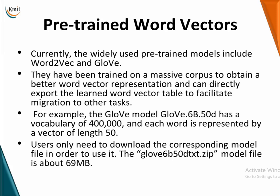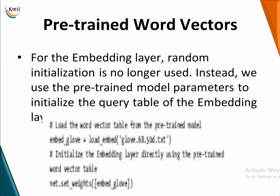For example, the GloVe model has a vocabulary of 400,000 words and each word is represented by a vector of length 50. It is already pre-trained with the best vector representation and you can use it directly in your model. All you need to do is download the zip file, which is around 69 MB. To use it, instead of random initialization in the embedding layer, you load the GloVe pre-trained model and set your weights through the word vector table using just two lines of code.